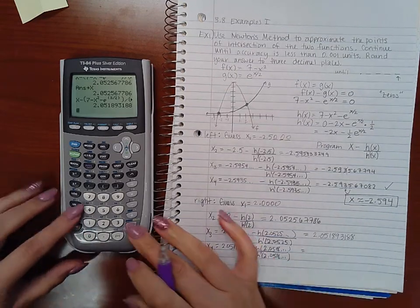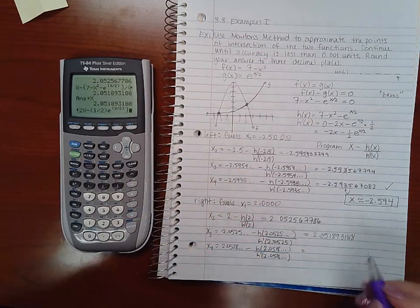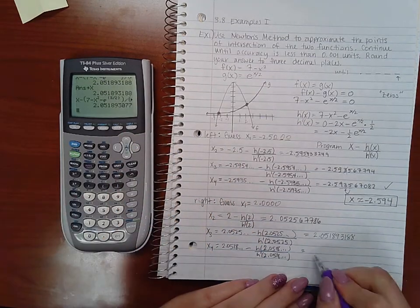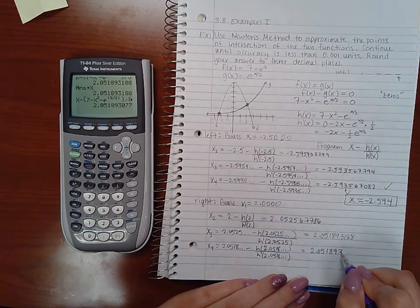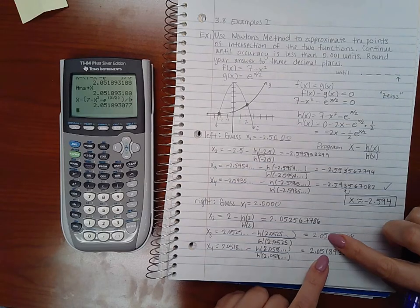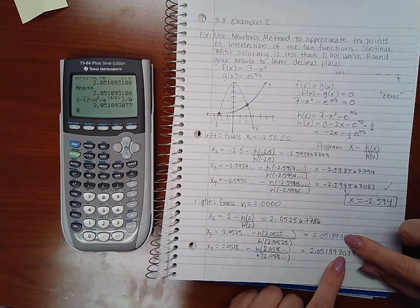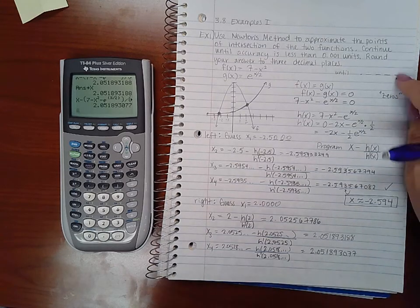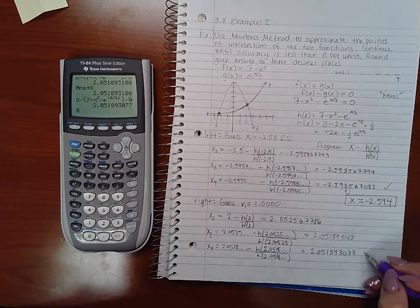So what do we get when we do store x, and then we plug it in? We get 2.051893077. So now they are the same second digit, third digit, and fourth digit. They're actually the same on the fifth and the sixth digits as well. But we just need them to have it all the same to the fourth digit after the decimal. So we can stop.